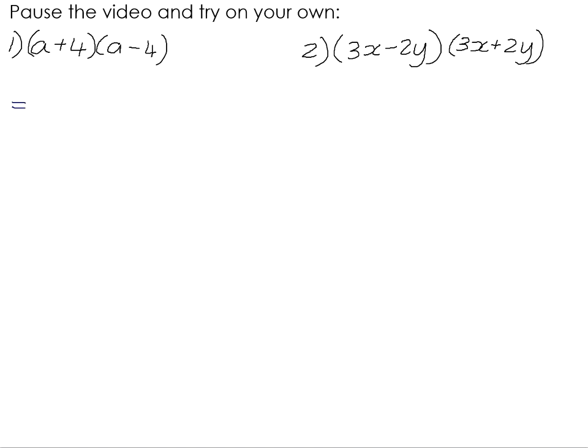Number one, first of all have a look at the binomials, a and a, 4 and 4, they're exactly the same, the one is a plus and the one is a minus, so these are sum and difference binomials, so we just do the firsts and the lasts. a times a is a squared, and 4 times negative 4 is negative 16.